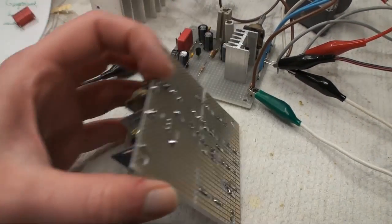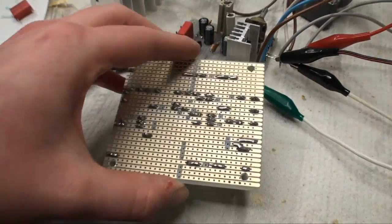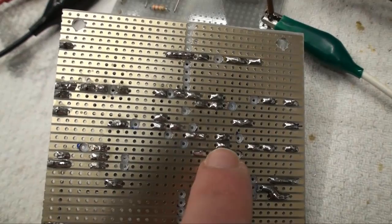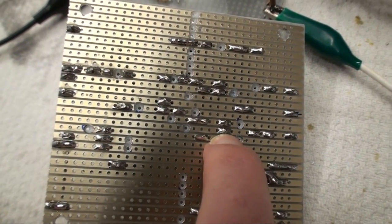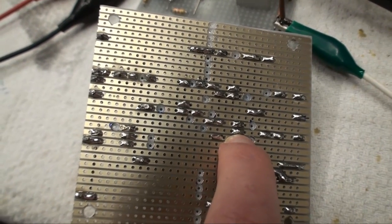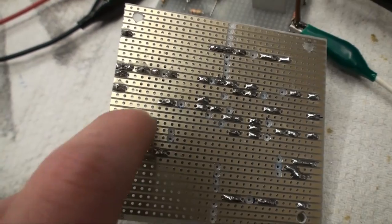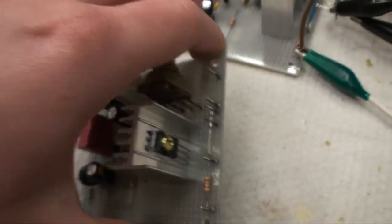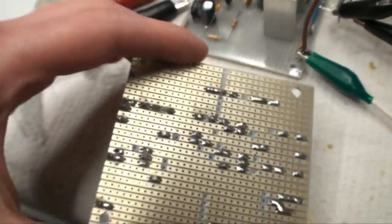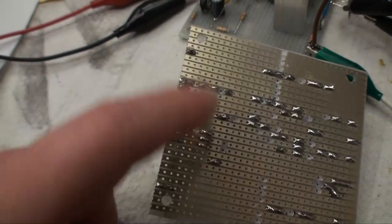I think what might have caused the problem in the end was right here. This is the base of the PNP input transistor, and in the original design it was running all the way across over here right into the output part.